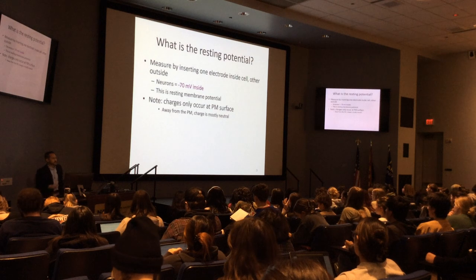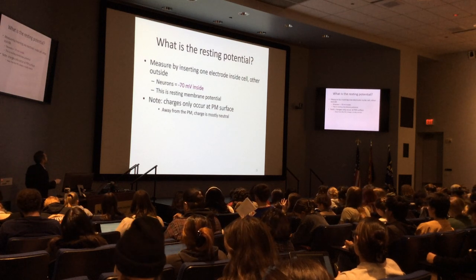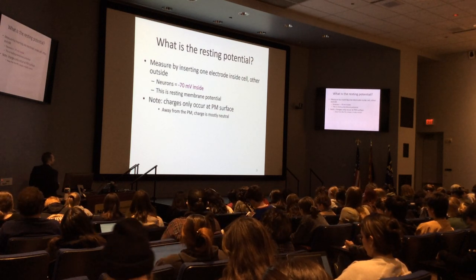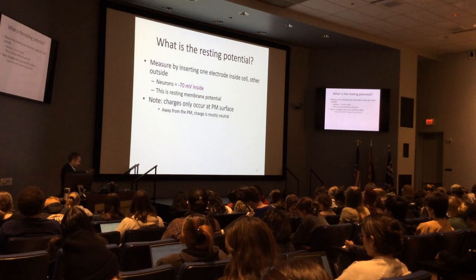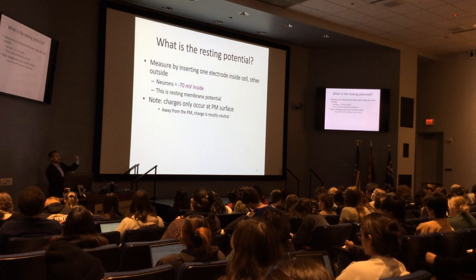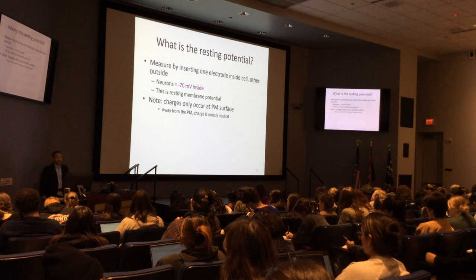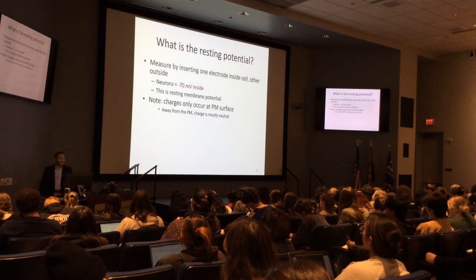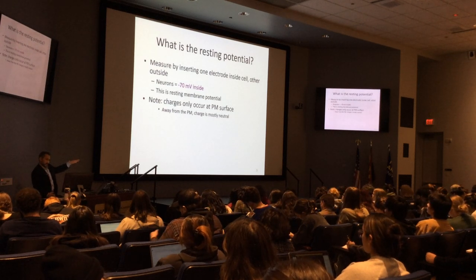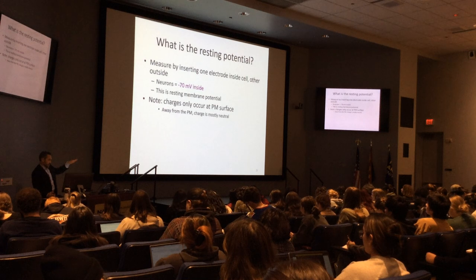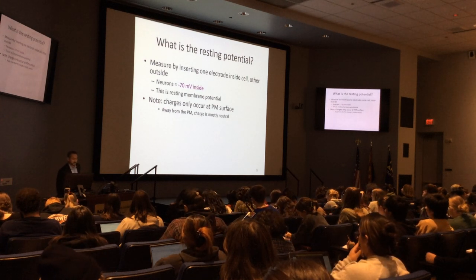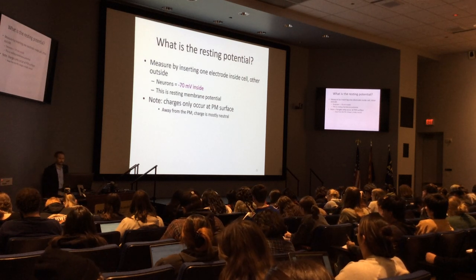The resting membrane potential — you insert an electrode inside the cell and one outside and measure the difference. That potential inside a neuron at the plasma membrane interface is minus 70 millivolts. That's the resting membrane potential, and it only really occurs at the plasma membrane surface.